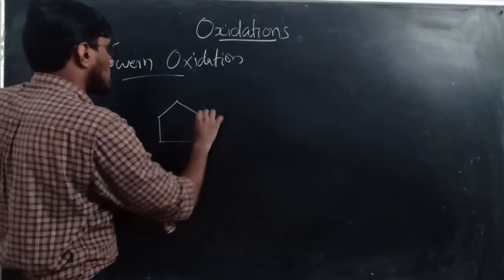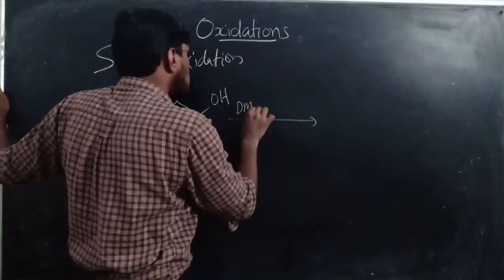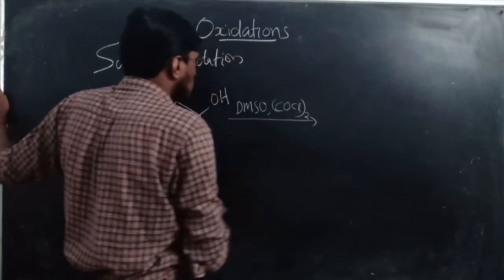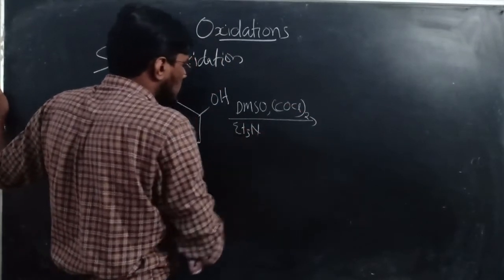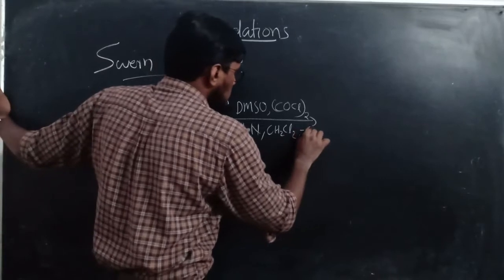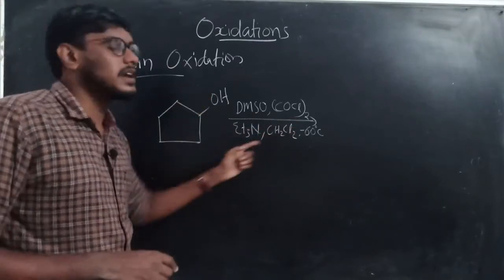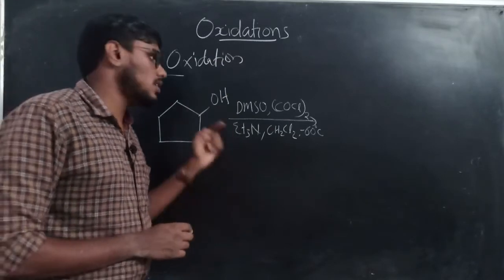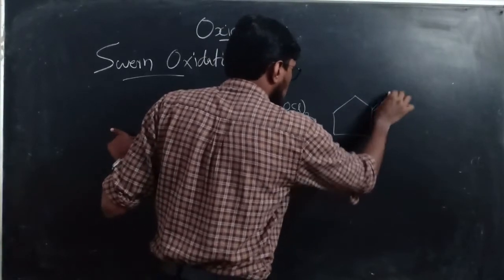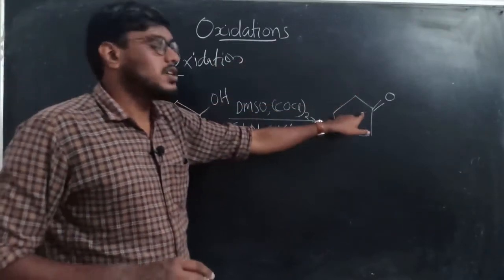Here are some examples of Swern oxidation. First example: cyclopentanol reacts with DMSO, oxalyl chloride (COCl₂), and a base — triethylamine — in dichloromethane at −60°C. These are mild conditions; Swern oxidation typically requires mild conditions but gives very high yield. Following the same mechanism discussed earlier, cyclopentanol gives the ketone (cyclopentanone) as the product.